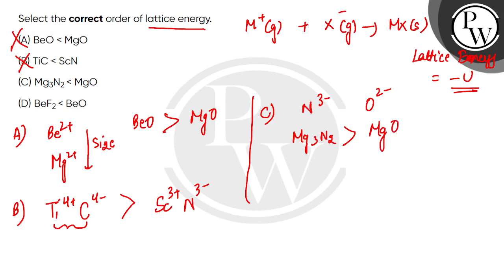Since option C states MgO has greater lattice energy than Mg3N2, which is incorrect, we rule out option C.